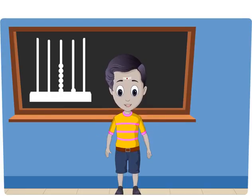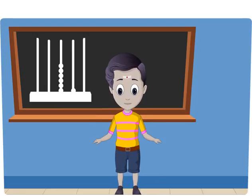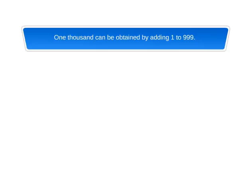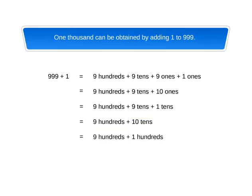In Standard 2, we have learnt numbers up to 999. Let us talk about the number next to 999, which is 1000. 1000 can be obtained by adding 1 to 999. 999 plus 1 equals 9 hundreds plus 9 tens plus 9 ones plus 1 one, or 9 hundreds plus 9 tens plus 10 ones, or 9 hundreds plus 10 tens, which equals 10 hundreds, or 1,000.